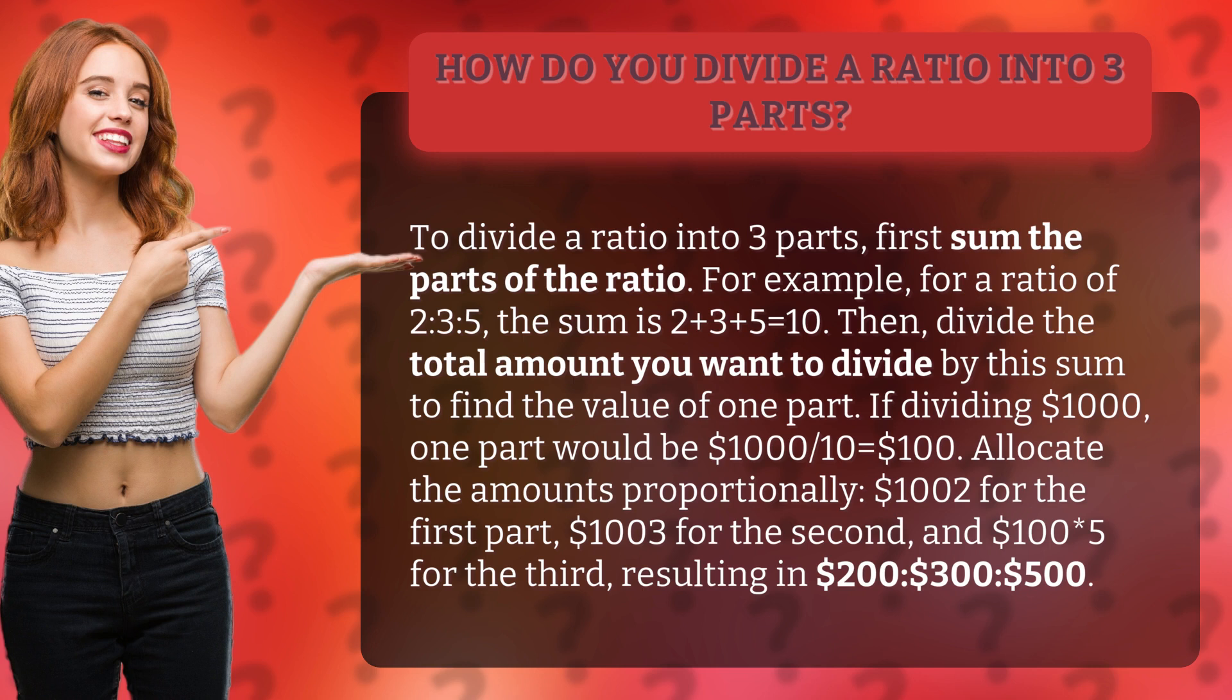For example, for a ratio of 2:3:5, the sum is 2 plus 3 plus 5 equals 10.